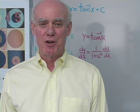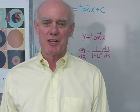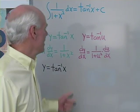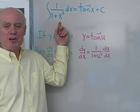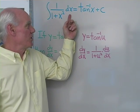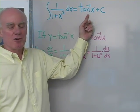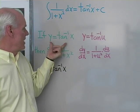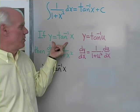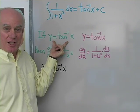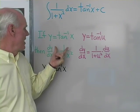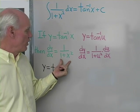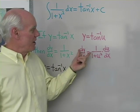Let's continue our work with integration by looking at some integrals that involve inverse trig functions. The indefinite integral of 1 over 1 plus x squared dx is inverse tangent x plus c. That means it came from this derivative formula: if y equals inverse tangent x, then the derivative of y with respect to x is 1 over 1 plus x squared.